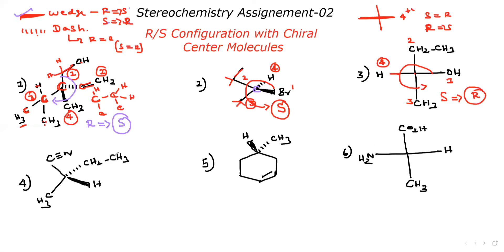Go for the fourth question. This is the chiral carbon. In CN, in H, in carbon, H, carbon, CN — nitrogen first. Nitrogen is higher priority than carbon, so it is first. It is second, it is third, it is fourth. Do rotation: one, two, three. Clockwise. Fourth group in wedge — the answer is R.